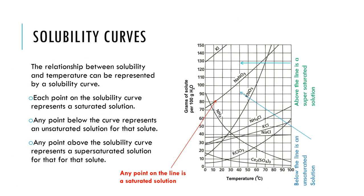If we plot the solubility of compounds at different temperatures, we create a solubility curve. These curves show the relationship between solubility and temperature, and reading them allows us to estimate where saturated, unsaturated, and supersaturated conditions occur for different substances.